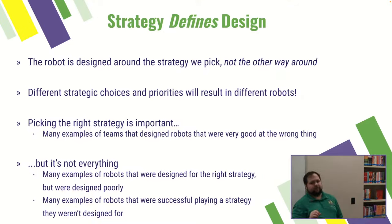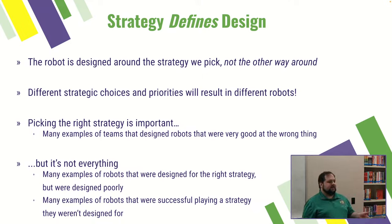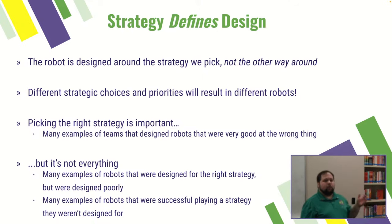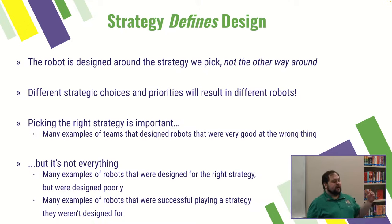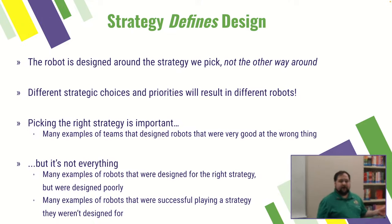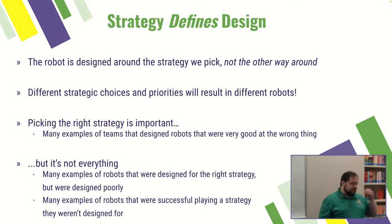One of the key takeaways: the strategy we select defines the design. The robot we design is based on the strategy we pick — not the other way around. We don't decide what kind of robot we want to build and then figure out how it should play the game. We figure out the optimal way to play the game based on our resources, goals, and knowledge, and then figure out what the best robot architecture is to achieve that. Different strategic choices and priorities result in different robots, so it's really important to have those figured out first.